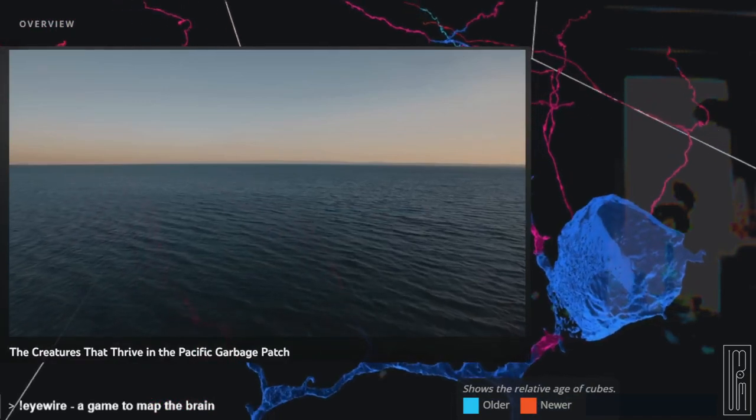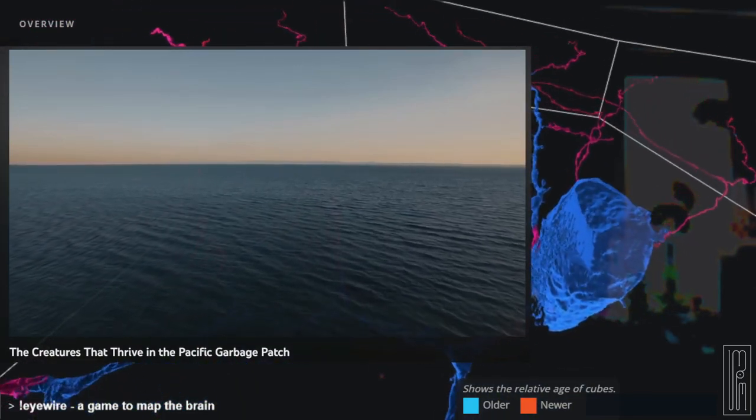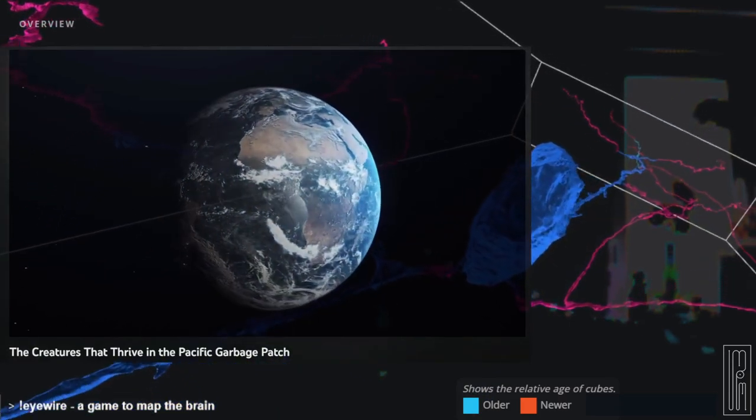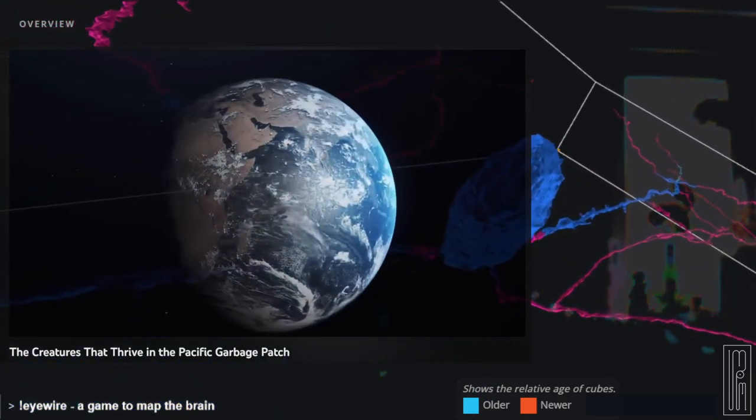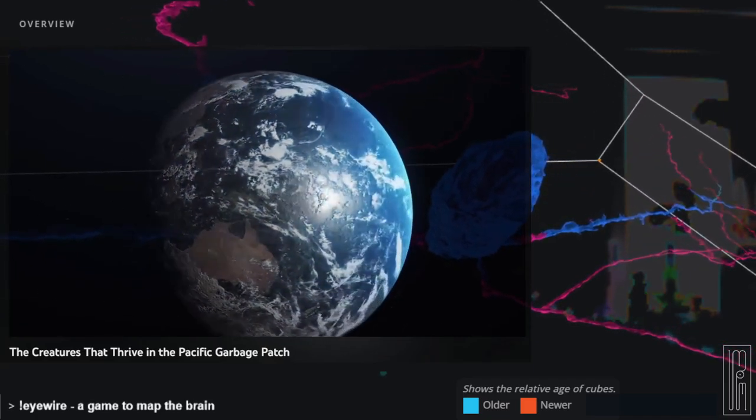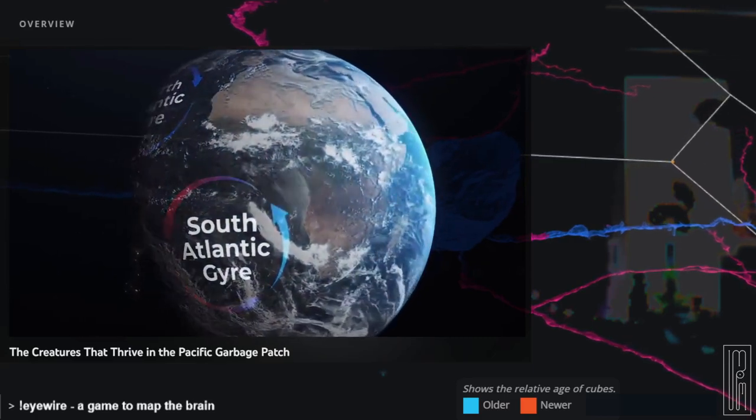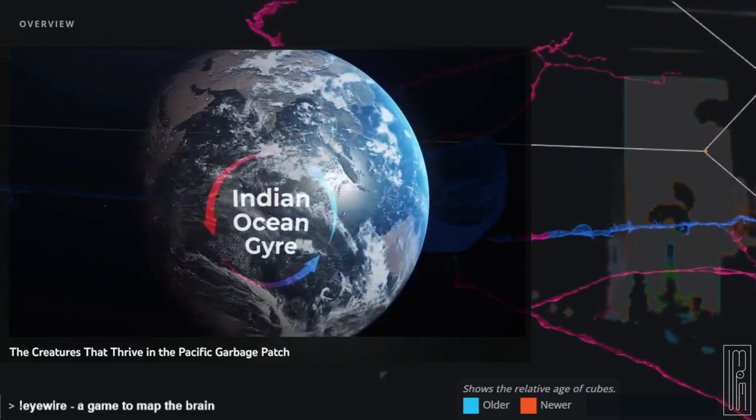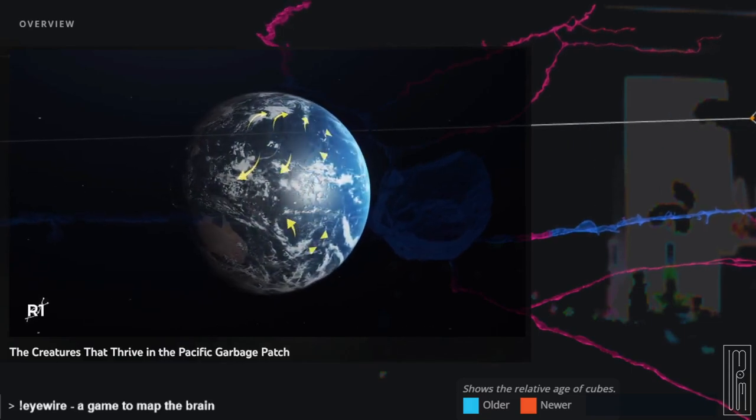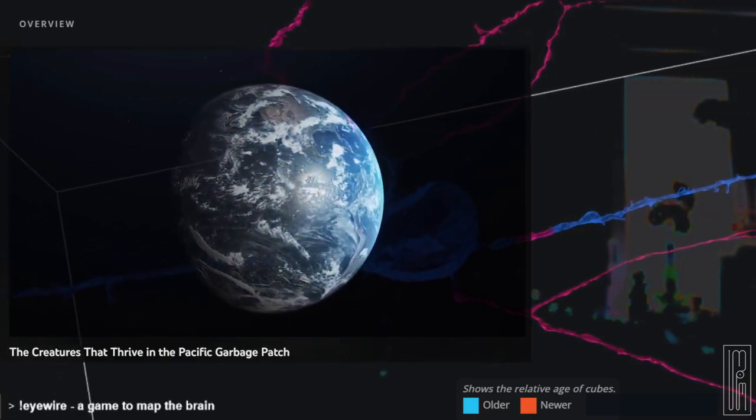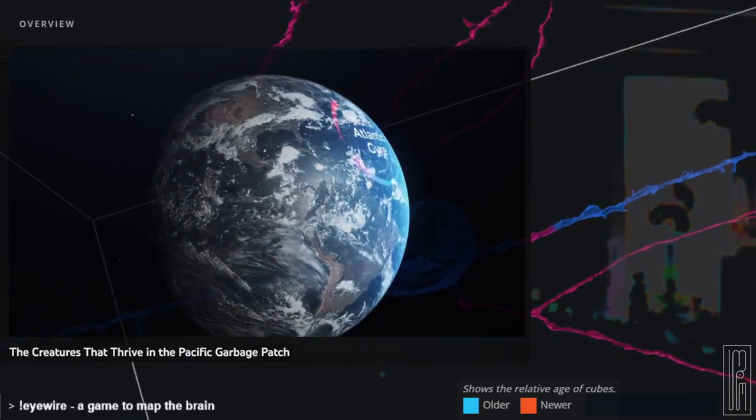Even under the calmest conditions, oceans are never completely still. Ocean gyres are a perfect example of this. There are five major gyres found across the planet, in the North and South Pacific, North and South Atlantic, and in the Indian Ocean. They're created by the spinning rotation of the planet, the blowing wind, and the placement of land masses. And there are plenty of smaller gyres all over the oceans too.